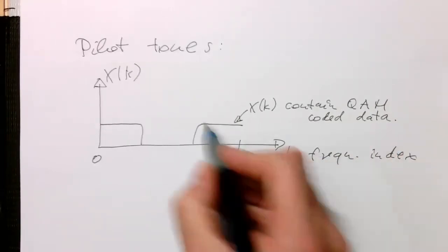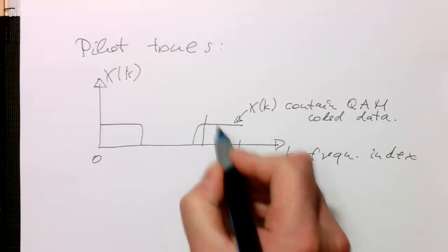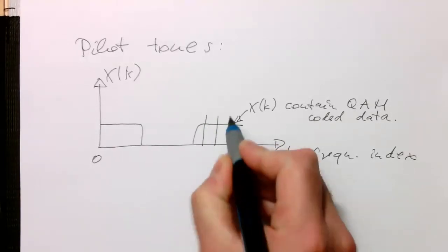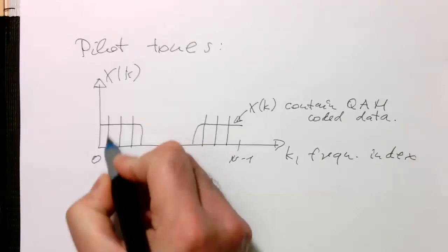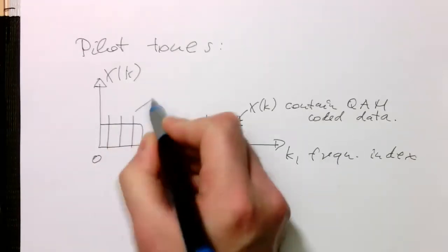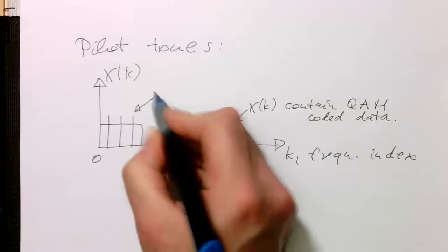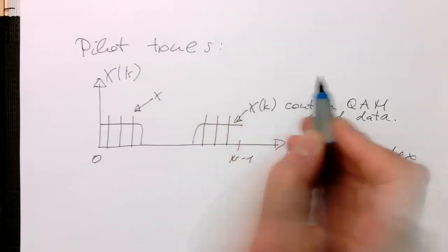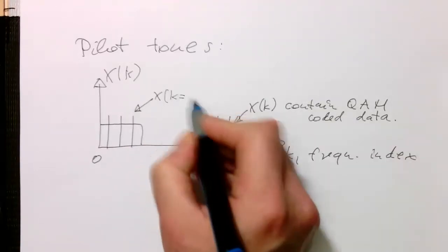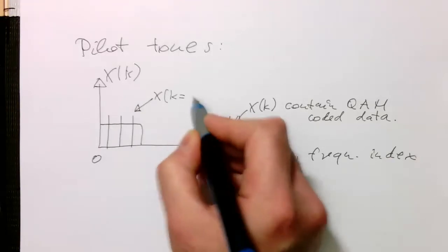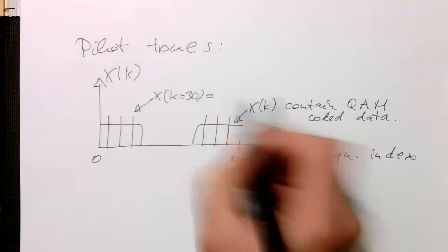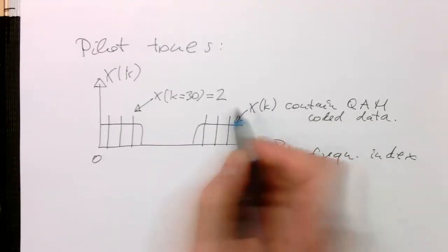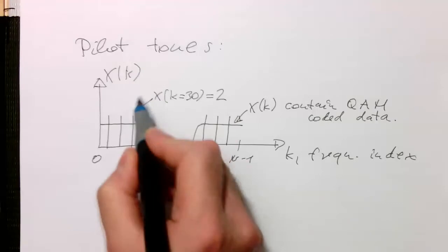we add in this spectrum here fixed xk, so they always have the same value. So we set this xk here, let's say this is here xk of let's say 30 or something like this, and we're setting this to 2. And obviously, we do the same for the other ones here.